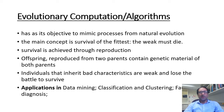The weakest must die. In natural evolution, survival is achieved through reproduction. Offspring reproduced from two parents contain the genetic material of both parents, hopefully the best characteristics of each. Those individuals that inherited bad characteristics are weak and lose the chance to survive. Evolutionary computation finds its applications in data mining, classification and clustering, and fault diagnosis.